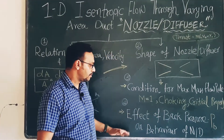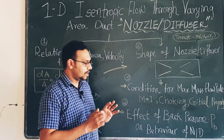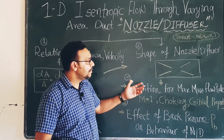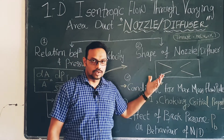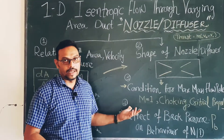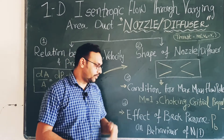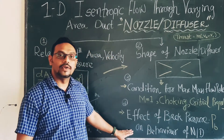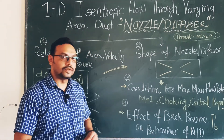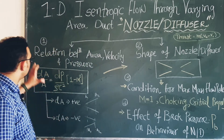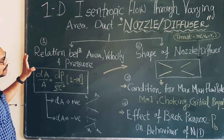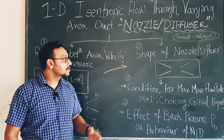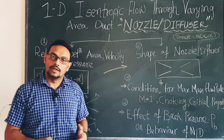If the back pressure is not at the desired specific value, there may be a shock occurring inside the nozzle, causing significant energy loss. These phenomena — the effect of back pressure on the behavior of the nozzle or diffuser — are covered in the fourth theory. All four theories are interrelated and together help us fully understand the behavior of nozzles and diffusers.